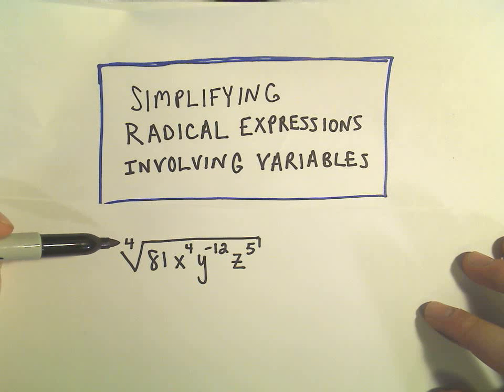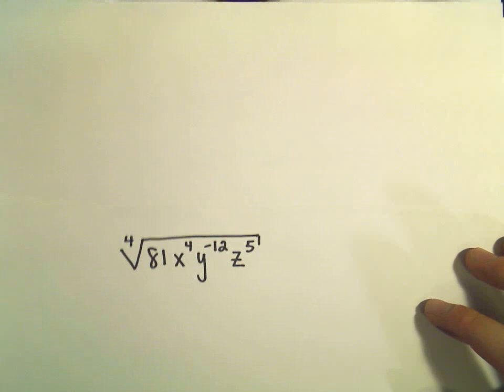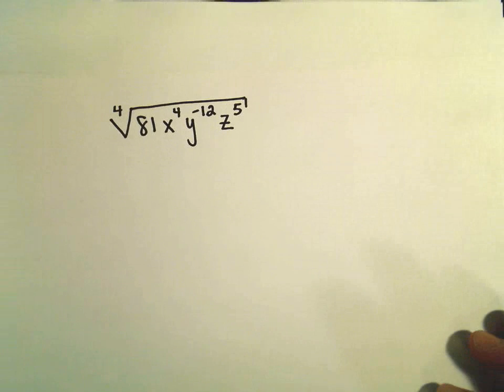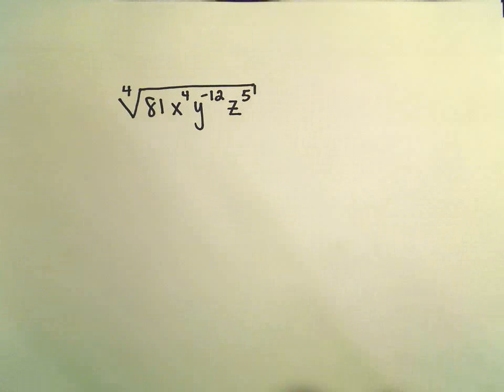First off, notice this is a fourth root instead of a square root, and also we have some negative exponents underneath the radical, which is fine. It's not a problem, but just a couple things to be aware of.